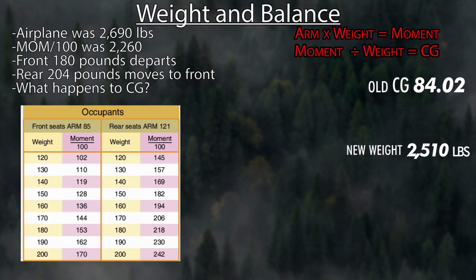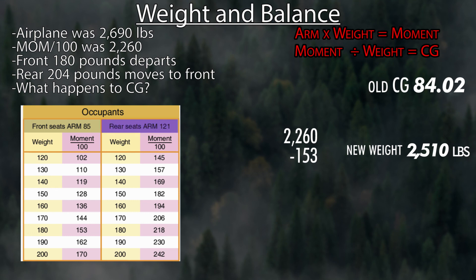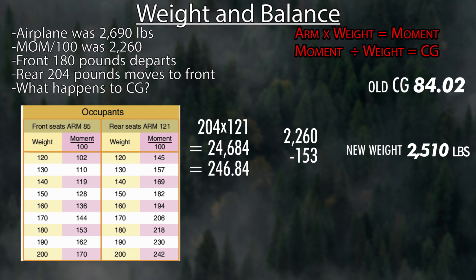Now for the moment — this airplane has a table instead of a graph. For the 180-pound passenger leaving the front seat, we subtract 153 for the moment. We also subtract the moment for the 204-pound person who was in the back. There's no entry for 204 in the table, but the rear seat arm is 121. So: 204 times 121 equals 24,684, divided by 100 gives 246.84. Since they're leaving the back seat, we subtract that from the total moment.